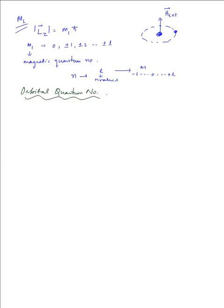The quantum mechanical description of the hydrogen atom yields the result that the angular momentum of an electron in its orbital motion is quantized both in magnitude and direction, given by L² equals l(l+1)ℏ² and Lz equals ml·ℏ. L² is the square of the magnitude of the orbital angular momentum, Lz is the z-component, and l and ml are the quantum numbers that restrict L² and Lz to certain specific values.